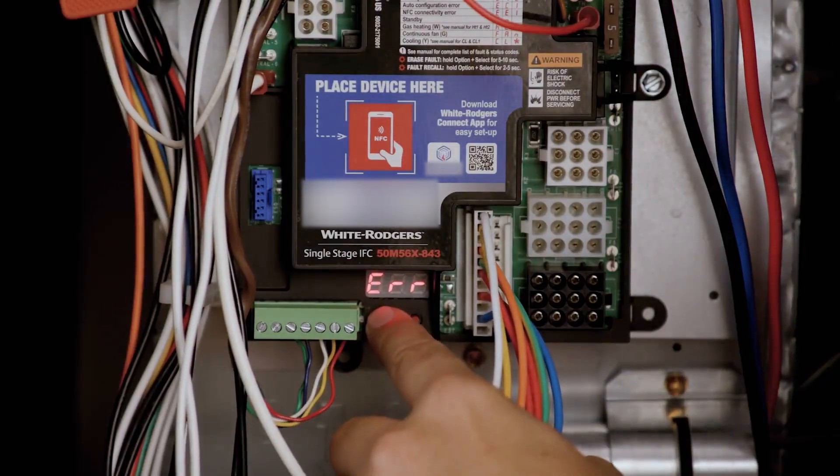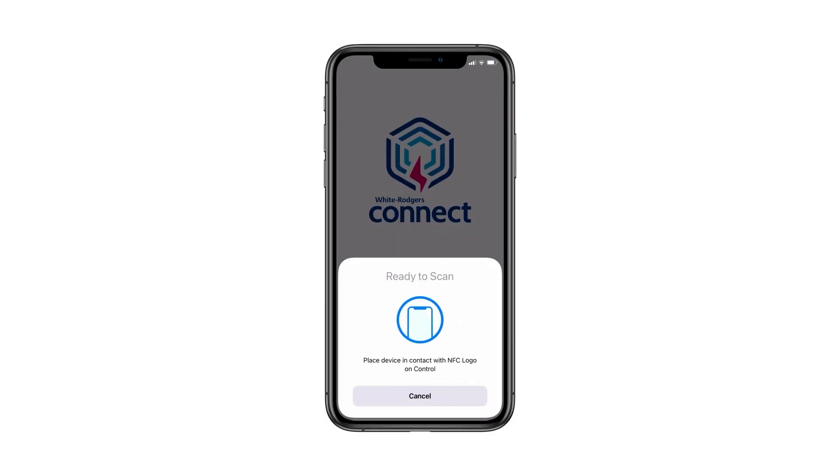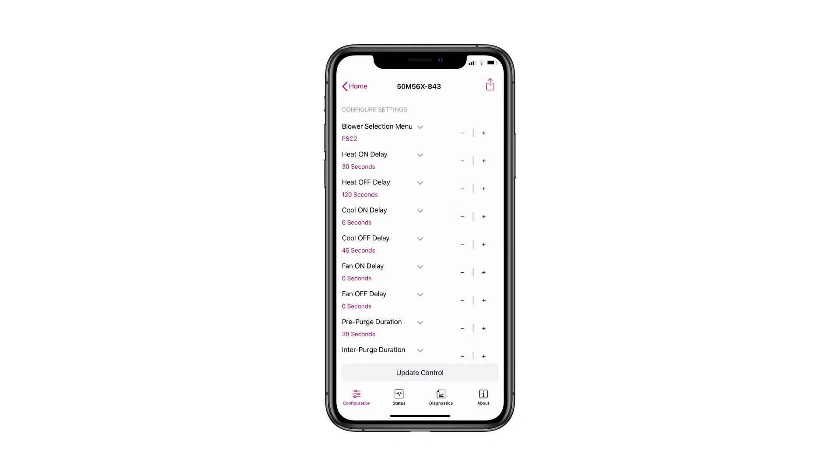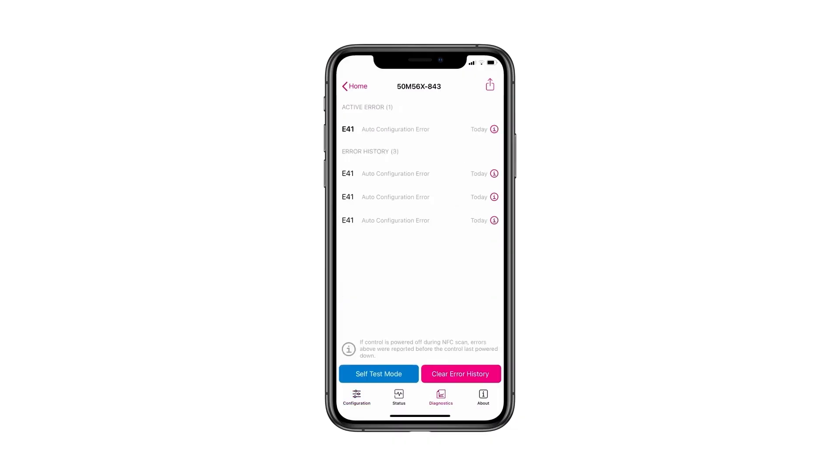Codes can be viewed and cleared directly from the control. Additionally, the White Rogers Connect app offers a diagnostic tab. You can also view and clear all error codes from this screen.